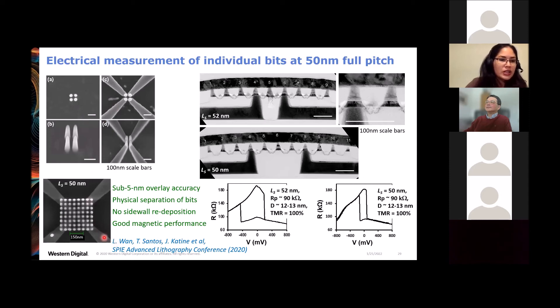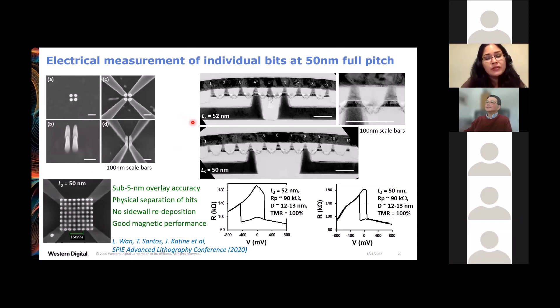So we took a slice through the diagonal here to get these cross section images that you see here. And so this took a lot of sub-5 nanometer E-beam lithography steps. As you can see, the alignment is pretty good in this demo here of the bits to the bottom point contacts. And we do indeed confirm physical separation of the bits. We do not have sidewall physical redeposition. And so we were able to do electrical measurement and see the switching of these individual bits, and we confirm decent magnetic performance because we're able to see 100% TMR in these examples.